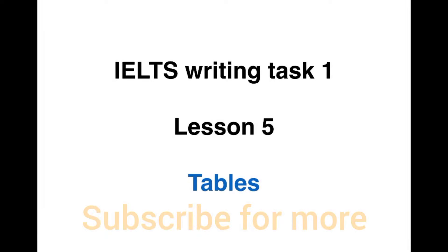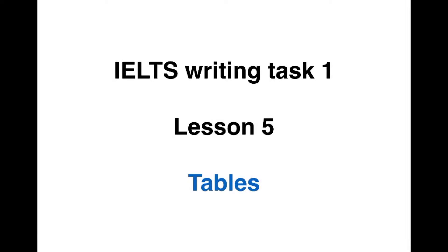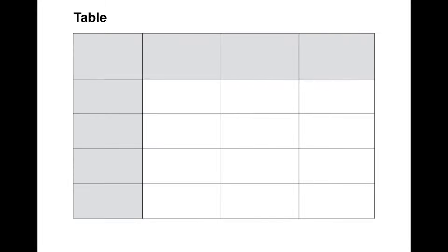IELTS Writing Task 1, Lesson 5: Tables. You probably know this, but a table looks like this. You'll see down the left side and along the top, in the grey areas in this case, categories or items. This could be years, countries, or almost any kind of item. And in the rest of the table, you'll see the numbers.